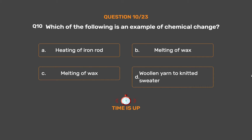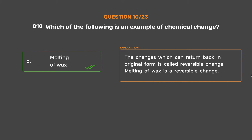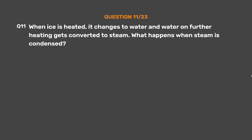The correct answer is Option C: Melting of wax. The changes which can return back to their original form are called reversible changes. Melting of wax is a reversible change.